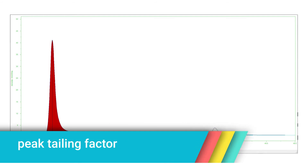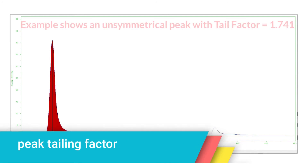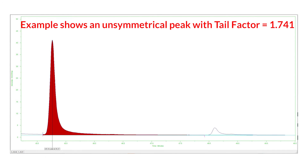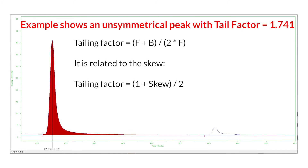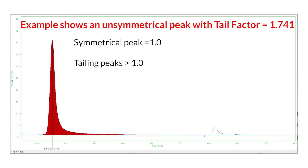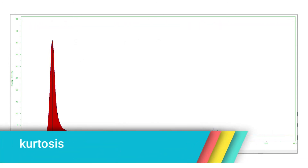The tailing factor is defined as the ratio of the peak width to twice the front width. Tailing factor equals (F + B) divided by 2 times F. It is related to the skew: tailing factor equals (1 + skew) divided by 2. Tailing factor values are always greater than 0.5. A symmetrical peak has a tailing factor of 1.0, and a peak that tails has a tailing factor greater than 1.0.